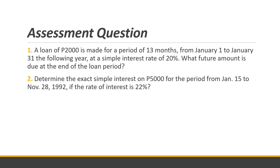Assessment questions: First, a loan of 2,000 is made for a period of 13 months, from January 1 to January 31 of the following year, at a simple interest rate of 20%. What future amount is due at the end of the loan period? Second, determine the exact simple interest on 5,000 pesos from January 15 to November 28, 1992 — check whether 1992 is a leap year — at an interest rate of 22%. Find the interest I.